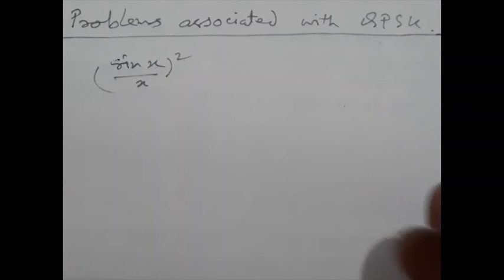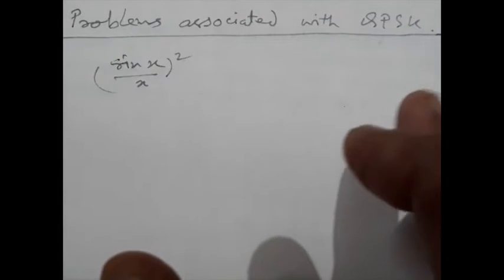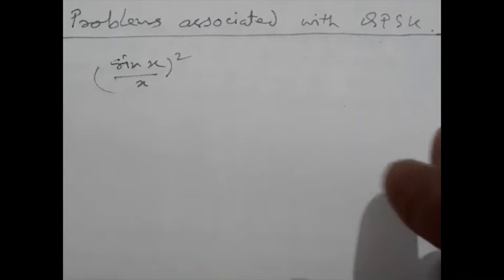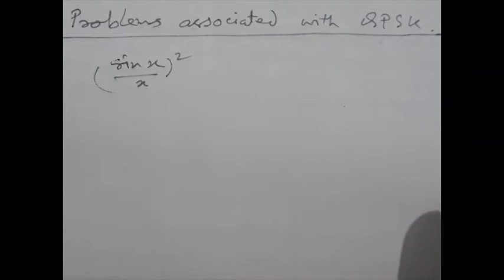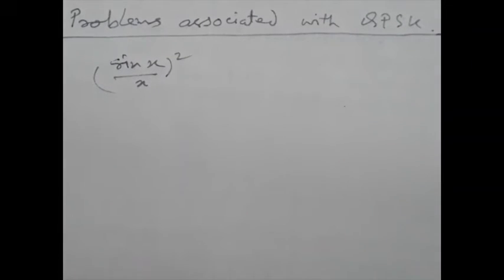And due to this AM, low efficiency linear amplifiers, means class A or class B type of amplifiers instead of high efficiency non-linear amplifiers are required for amplifying the QPSK signal without distortion. So, that is the biggest problem.